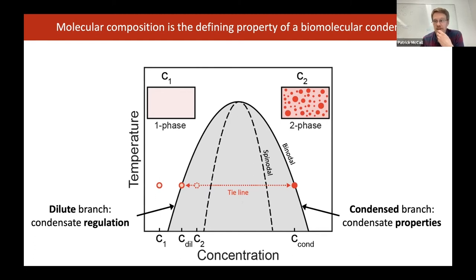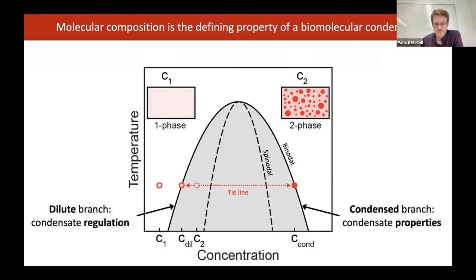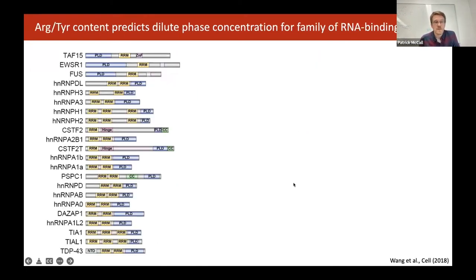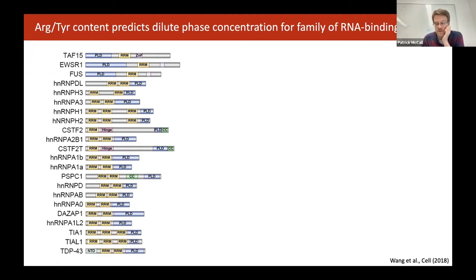For my question, I'd really like to understand this condensed phase concentration value and where it comes from. When I started my postdoc, a talented group member in Tony Hyman's lab — Jia Wang — had purified all the members of a large protein family of RNA binding proteins. These have some well-known members, including Fused in Sarcoma (FUS) and EWSR1, both of which are associated with cancers in some cases.